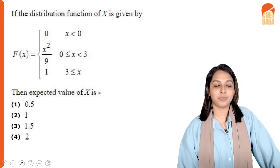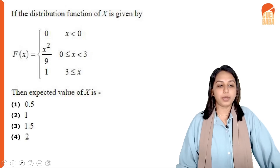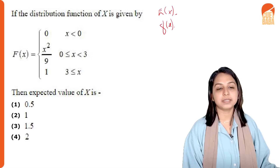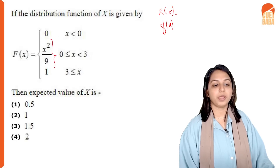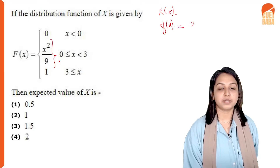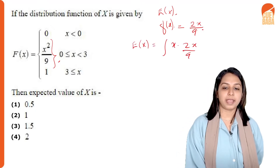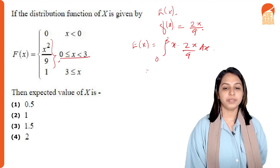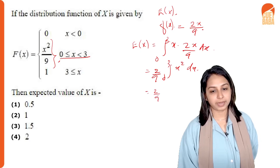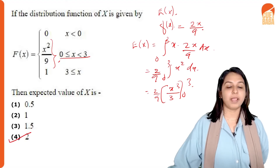The distribution function of x is given by F(x) = 0 for x < 0; x²/9 for 0 ≤ x < 3; and 1 for x ≥ 3. We need to find E[X]. First, we differentiate F(x) to get the density function: f(x) = 2x/9. Then E[X] = integral from 0 to 3 of x · (2x/9) dx = (2/9) · integral from 0 to 3 of x² dx = (2/9) · [x³/3] from 0 to 3, which gives E[X] = 2.